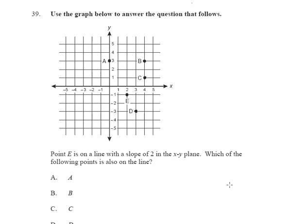Okay, question number 39 has us looking at this graph, and it says point E is on a line with a slope of 2 in the XY plane. Let me highlight E right here. Which of the following points is also on the line? Alright.